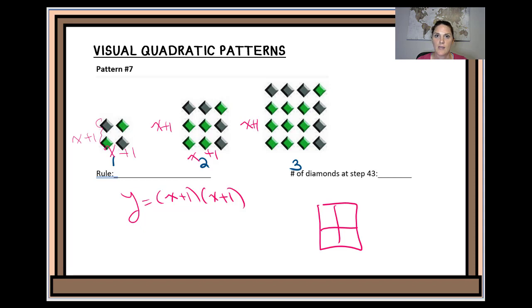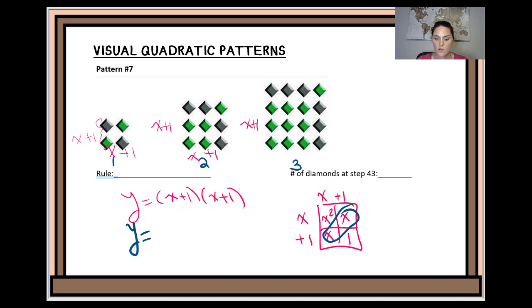Right now we have the factored form of a quadratic, and I'm going to use this area model to help put this into standard form. So x times x is x², x times 1 is x, x again, and 1 times 1 is 1. Remember to combine your like terms on the diagonal: x and x gives me 2x. So y equals x² plus 2x plus 1 is the standard form of this quadratic equation.